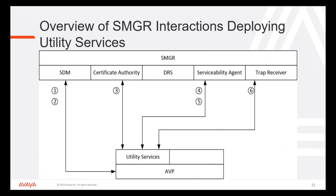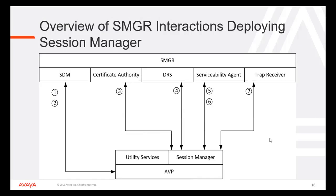Here is an overview of System Manager interactions when deploying Utility Services. First, SDM will be used to deploy Utility Server on AVP. Then the Utility Server will enroll itself with the System Manager certificate authority. System Manager will create a Serviceability Agent for Utility Services, and Utility Services will then send traps to the trap receiver on System Manager. For Session Manager: SDM deploys Session Manager, the certificate authority enrolls it with System Manager, DRS takes place between them, a Session Manager Serviceability Agent is created, and traps from Session Manager are sent to System Manager.